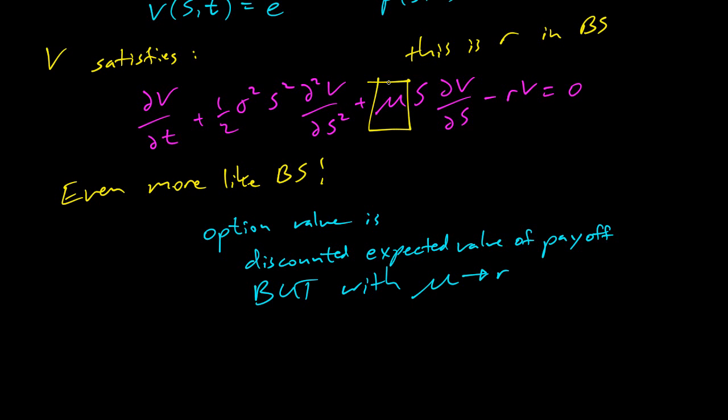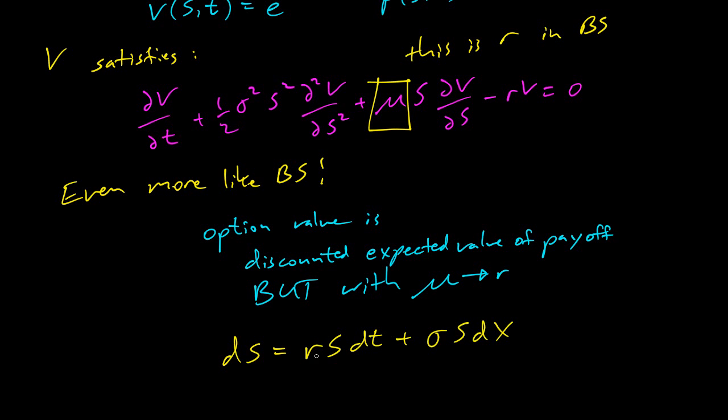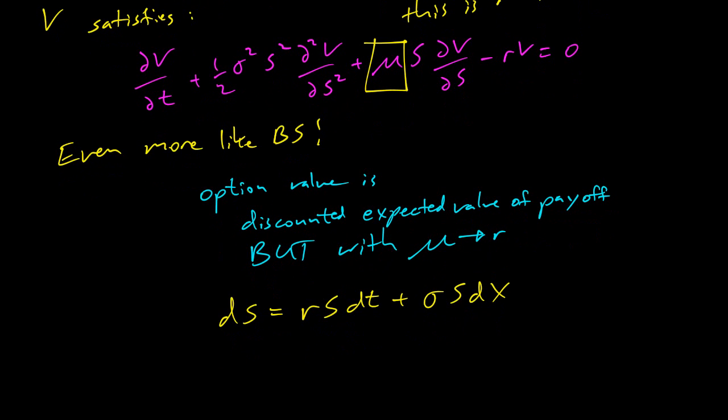We have to change this mu to an r, and this means that our random walk is actually dS equals rS dt plus sigma S dX in order to get the correct expectation value. We actually call this a risk-neutral random walk.